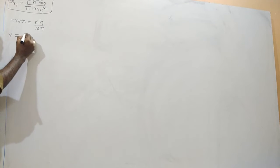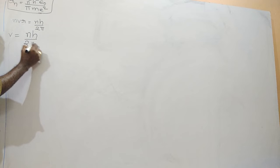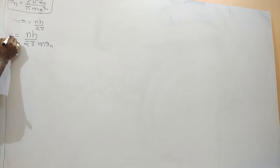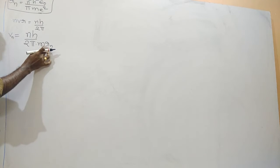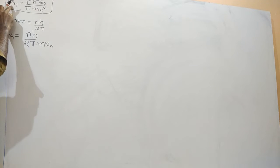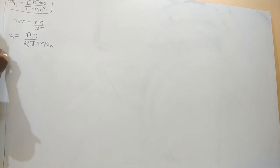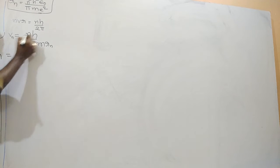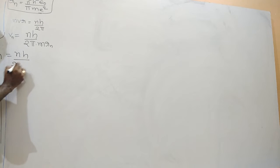So v is equal to nh divided by 2π m r. If we want to find the velocity vn of the electron in the nth orbit, we substitute rn — the radius of the electron in the nth orbit — which was already derived in the previous topic. I am substituting that rn value here.